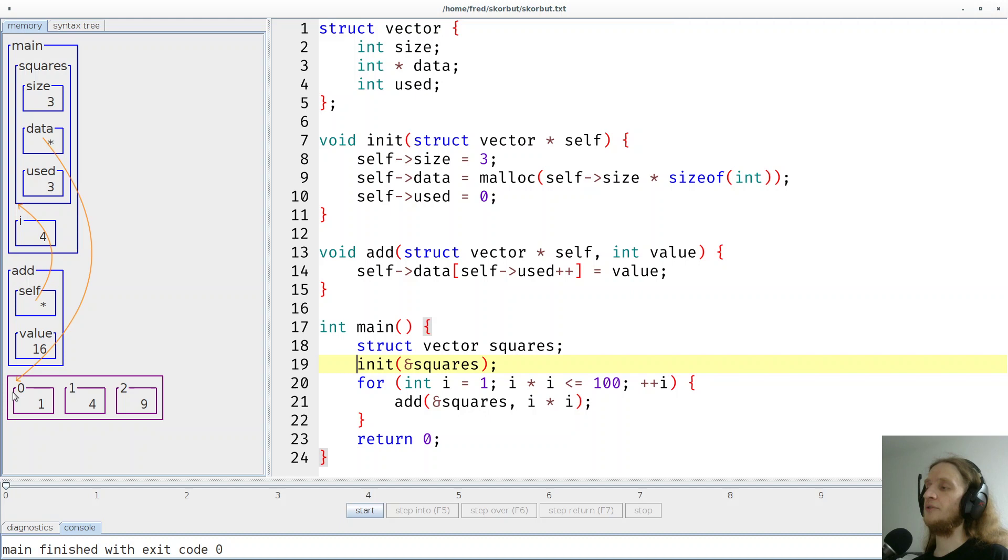So it makes a huge difference if you write data as a pointer or data as an array. Some people will tell you that arrays are pointers. That's complete nonsense. As you can see here, it's clearly a very different memory layout. But surprisingly, line 14 didn't change at all. So the syntax for accessing an array directly or indirectly is exactly the same. And that's probably why people tend to confuse arrays with pointers.